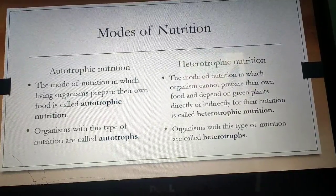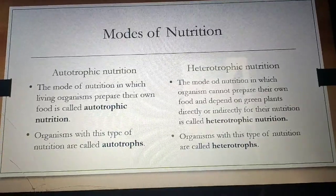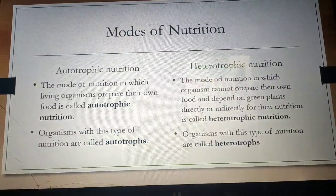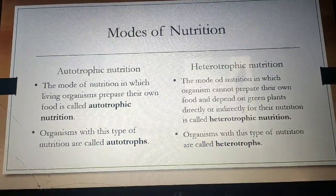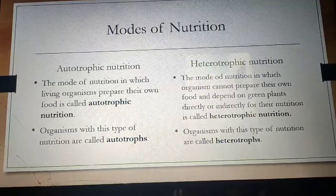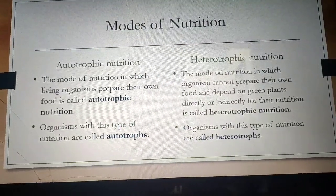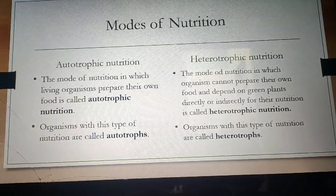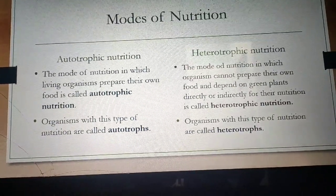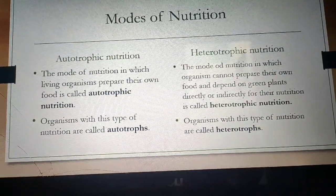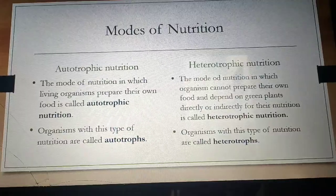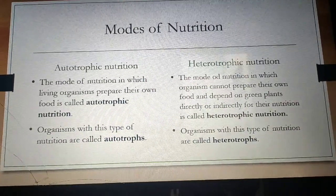Green plants are the best example of autotrophic nutrition. Now, what is heterotrophic nutrition? The word 'hetero' means different and 'trophic' means nutrition. The mode of nutrition in which organisms cannot prepare their own food and depend on green plants directly or indirectly is called heterotrophic nutrition. Herbivores eat green plants directly, while carnivores depend on herbivores and are thus indirectly dependent on green plants. Organisms with this type of nutrition are called heterotrophs.